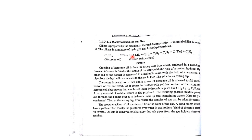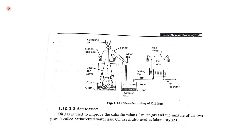After the cracking process, the following raw materials are obtained in smaller parts: methane, ethane, propene, coal tar, and ethyne gas. This is the composition of oil gas. The basic composition of oil gas is hydrogen (H₂) and methane — these are the main components of oil gas.